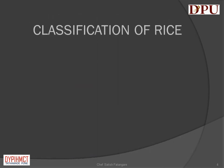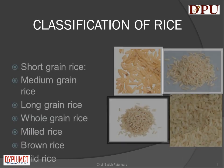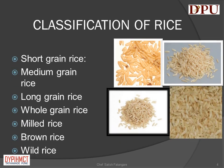In this slide we will discuss about the classification of rice. Rice is classified as: short grained rice, medium grained rice, long grained rice, whole grained rice, milled rice, brown rice, and wild rice.